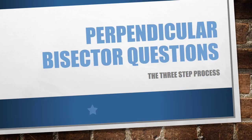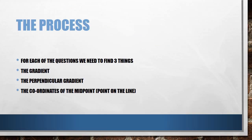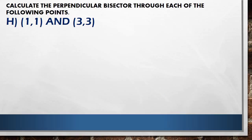Hi, Chris here from Flip Math. I'm going to take you through a couple of perpendicular bisector questions. Most people were getting them mostly right but I want to make sure they get them all right and clear up any of the little processes people are falling apart on. For each of these questions we're going to need three things: calculate the gradient, use that to calculate the perpendicular gradient which is our M, and find the coordinates of the midpoint between the two points as our x1 y1.